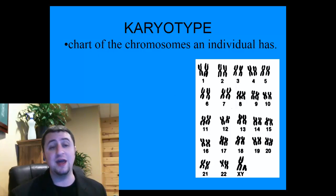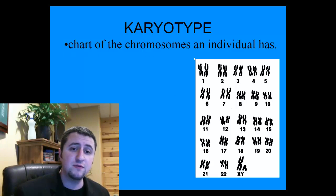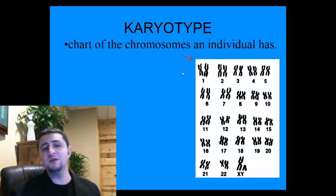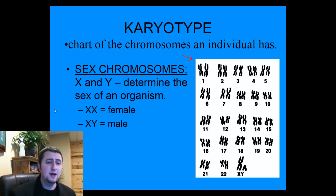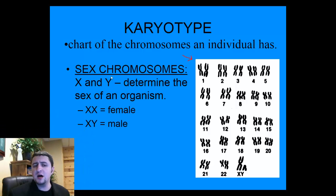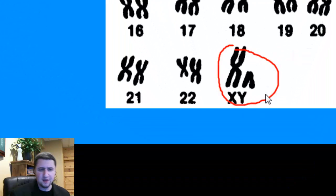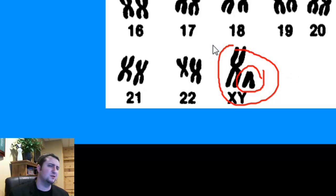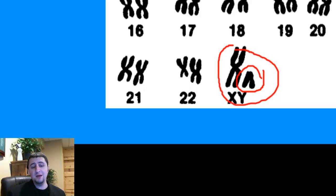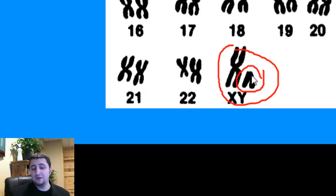Our journey begins with a karyotype. What is a karyotype? Well, it's sort of like a picture or a chart of all the chromosomes that you have in your body. For example, you have sex chromosomes — those are chromosome pair number 23. Now if you take a look, this one here is a little bit different than that one; that is what we call the Y chromosome. So anybody that has a Y chromosome is going to be a male, and males have X and Y.